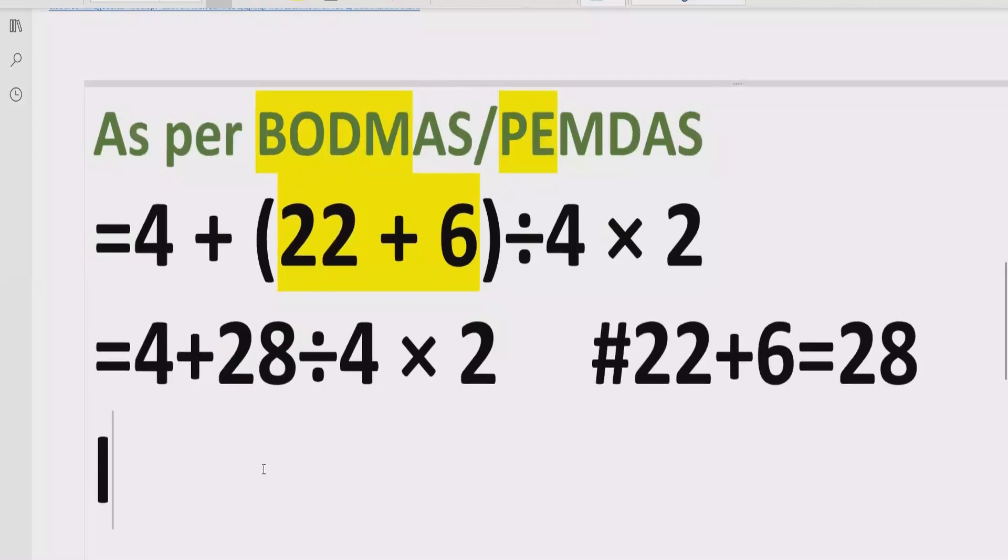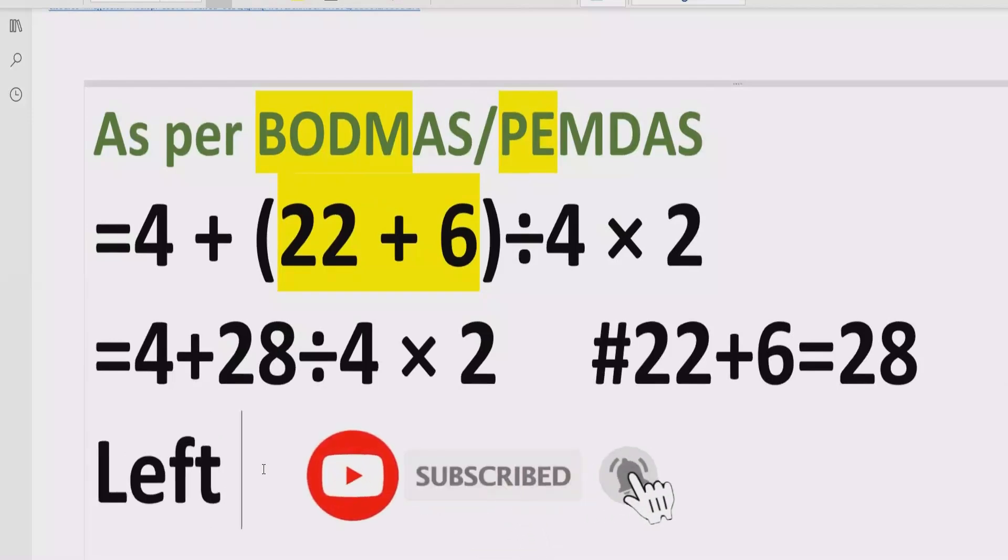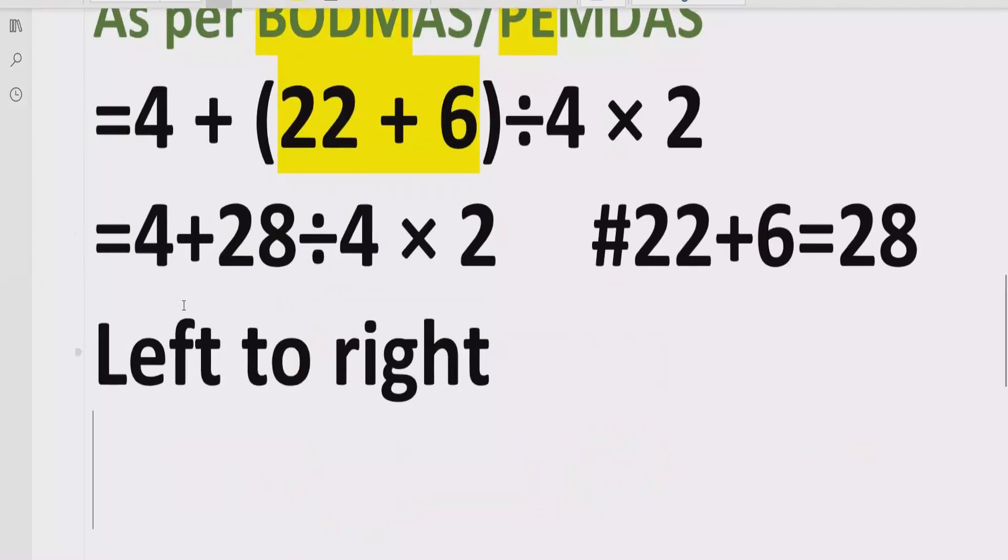And now we will solve division and multiplication. What will we do? We will go left to right in our expression and find out division and multiplication. So first of all, what will we do? 28 divided by 4, we will divide this one.